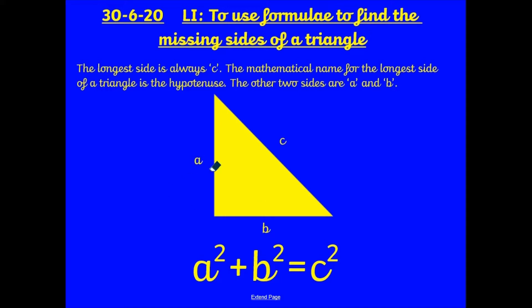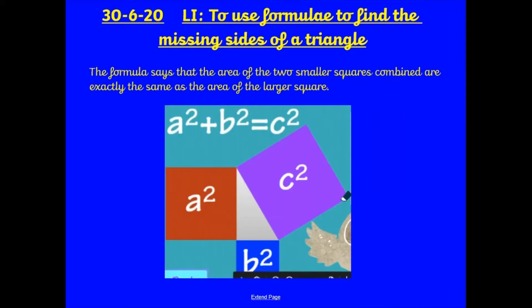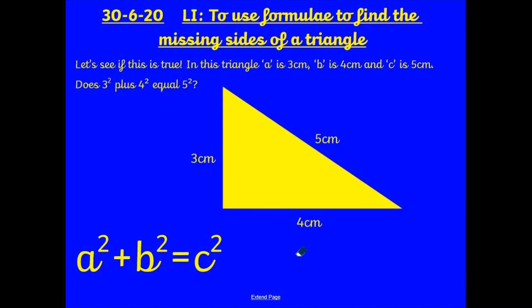So a² + b² will equal c². Now the formula says that the area of the two smaller squares combined are exactly the same area as the longest side. So we can use this formula to work out this missing side here.